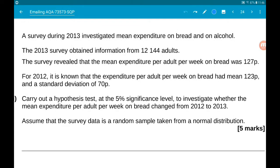For 2012, it is known that the expenditure per adult per week on bread was 123p with a standard deviation of 70p. Part A wants us to carry out a hypothesis test at 5% level of significance to investigate whether the mean expenditure per adult per week on bread increased from 2012 to 2013. We want to assume that the survey data is a random sample taken from a normal distribution.